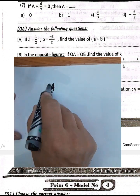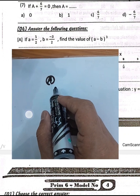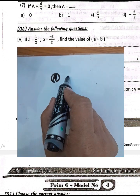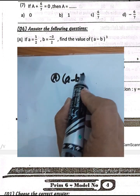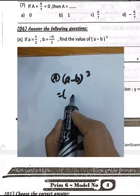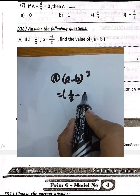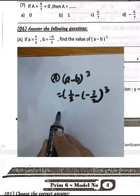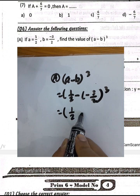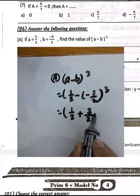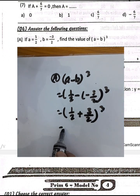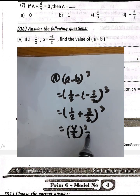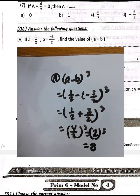Question number 8: If a equals one half and b equals negative 3 over 2, find the value of (a minus b) cubed. One half minus negative 3 over 2 equals one half plus 3 over 2 equals 4 over 2 equals 2. Then 2 cubed equals 8.